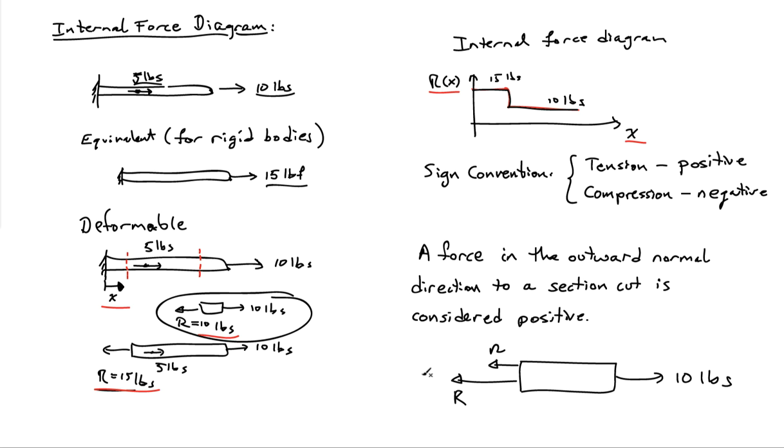So that's the sign convention. And what we do normally is when we make our free body diagrams, we always draw the unknown forces in the system in the positive direction. Then we let the signs take care of themselves. If they come out to be positive, then we know the system is in tension. If they come out to be negative, we know that the system is in compression.